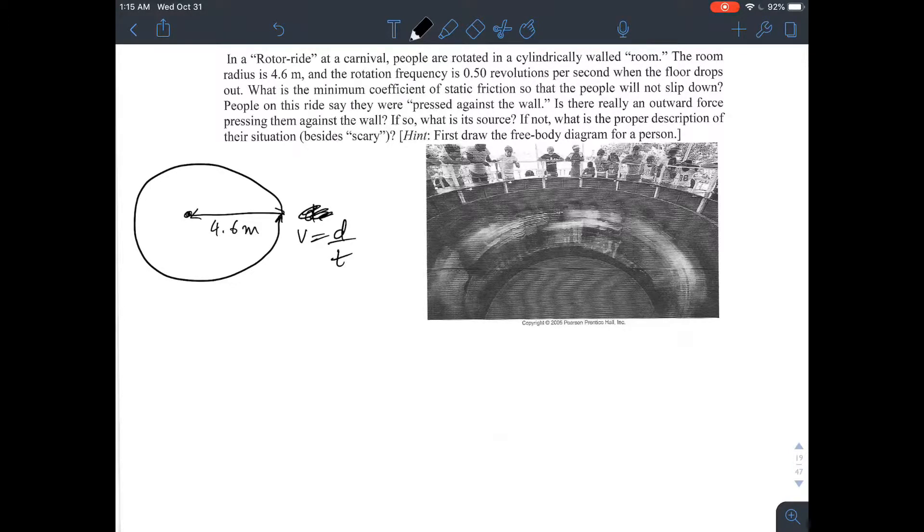Distance would be 2 pi r. So, 2 pi r. And that comes out, that's really one revolution, right? And if you take that, let's see, velocity equals distance over time, 2 pi times 4.6 meters over one revolution. That's the velocity.